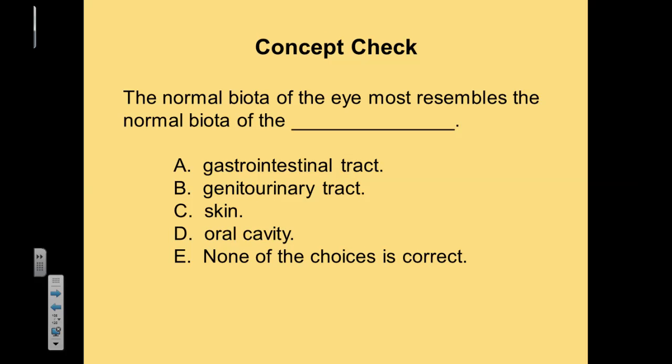Concept check: the normal biota of the eye most resembles the normal biota of what? A) GI tract, B) GU tract, C) skin, D) oral cavity, or E) none of the choices are correct. The correct answer is C, the skin. The biota of the eye most closely resembles the normal biota of the skin.